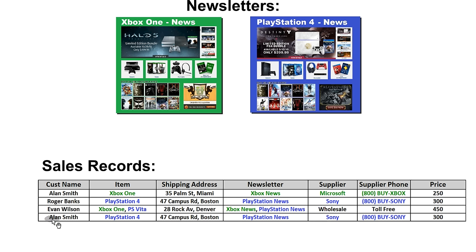There's another entry named Alan Smith. This person bought a PlayStation 4 and also lives on Campus Road in Boston — the same address as Roger Banks. He subscribed to the PlayStation newsletter, supplied by Sony, and the price was $300. Just ignore the color code; it's just a visual cue. So these are some of their sales records and I'm going to normalize these.